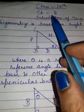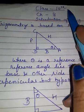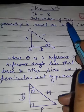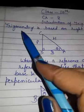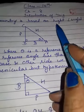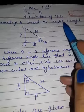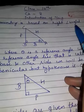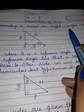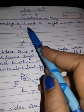Hello friends, today we will do the concept of Class 10th Chapter 8, Introduction of Trigonometry. Trigonometry is based on the right angle triangle. You know what a right angle triangle is — one in which one angle is 90 degrees.